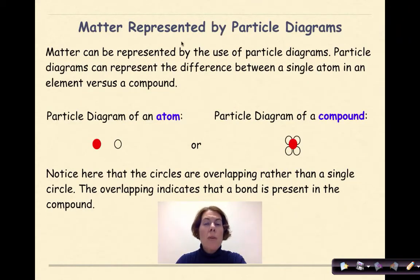Now let's look at how matter is represented by particle diagrams. Matter can be represented by the use of particle diagrams. Particle diagrams can represent the difference between a single atom in an element versus a compound. So a representation of a particle diagram of an atom might be this red sphere or this clear sphere right here. A particle diagram of a compound could have the red sphere overlapping the clear spheres to represent a bond. Notice here that the circles are overlapping rather than a single circle. The overlapping indicates that a bond is present in the compound.